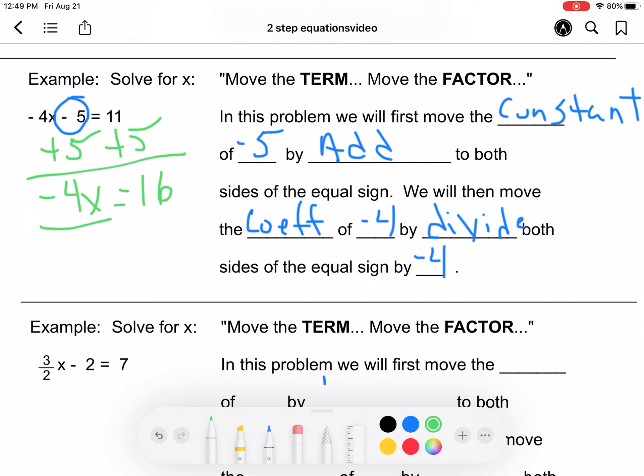Again, divide by negative 4. A negative divided by a negative gives me a positive. A positive divided by a negative gives me a negative. 16 divided by 4 gives me 4. I'm sorry, negative 4.